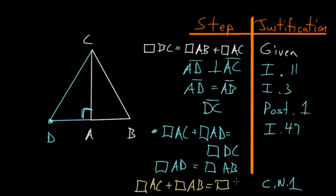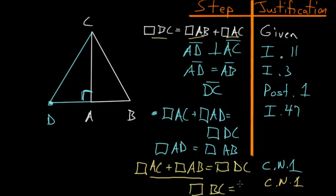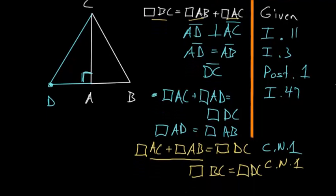The square on AC plus the square on AB — notice up here — is equal to the square on BC. So we can again use Common Notion 1, and this side equals the square on BC. That means the square on BC equals the square on DC, and if their squares are equal, then their side lengths are equal — in other words, BC equals DC.